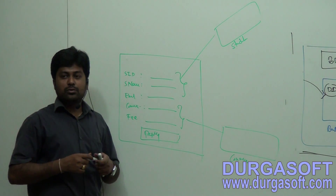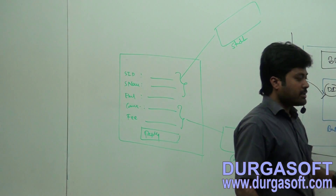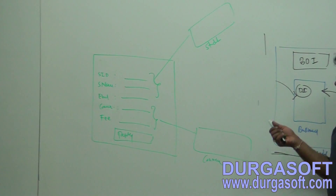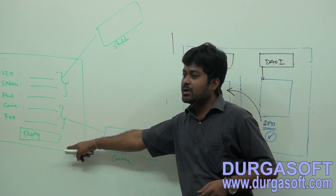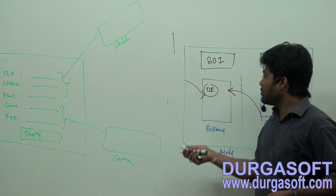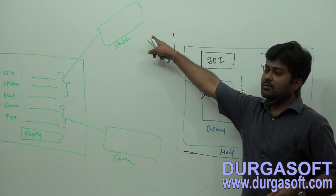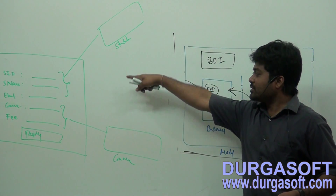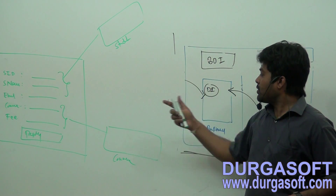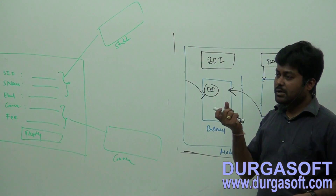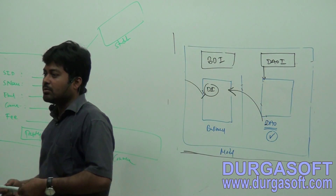You may need to interact with two DAO classes here. You may need to interact with two DAO classes and you may require one business method — one business method for student registration. For each table we have to write one DAO. In case for one single use case if you want to talk with two DAOs, your business needs to have the capability of transactions. Business needs to have transaction capability, not DAO.